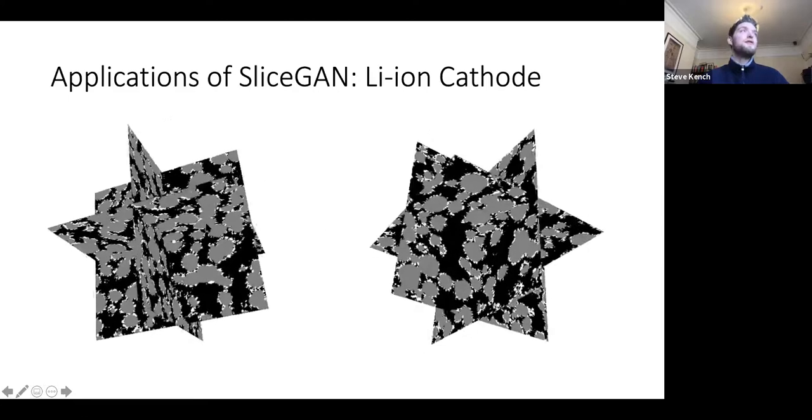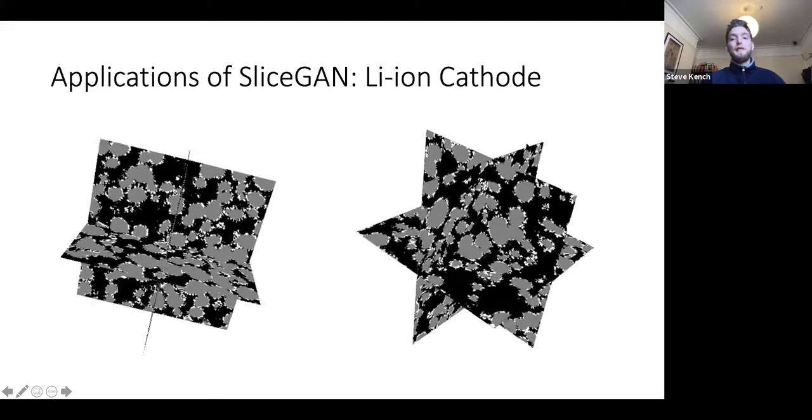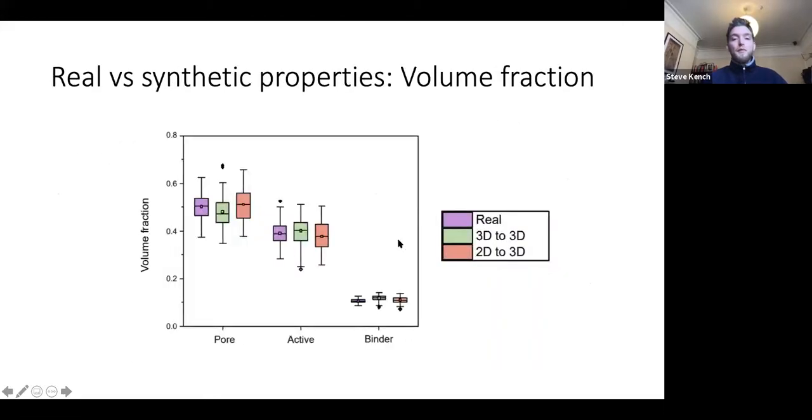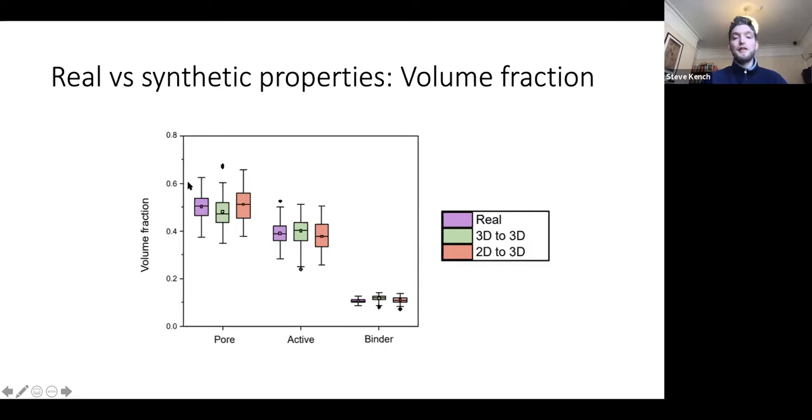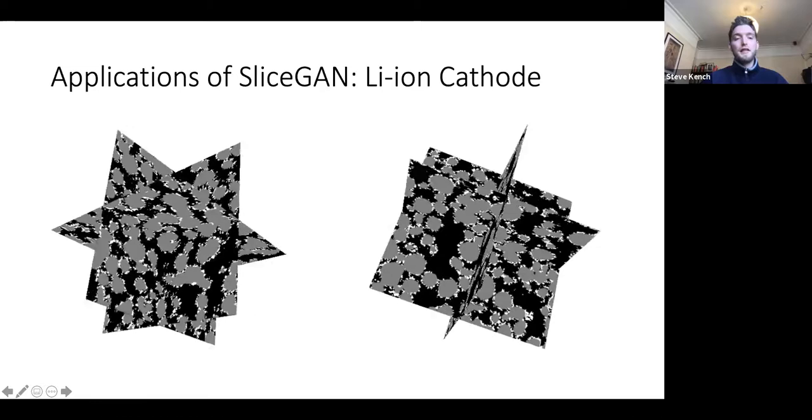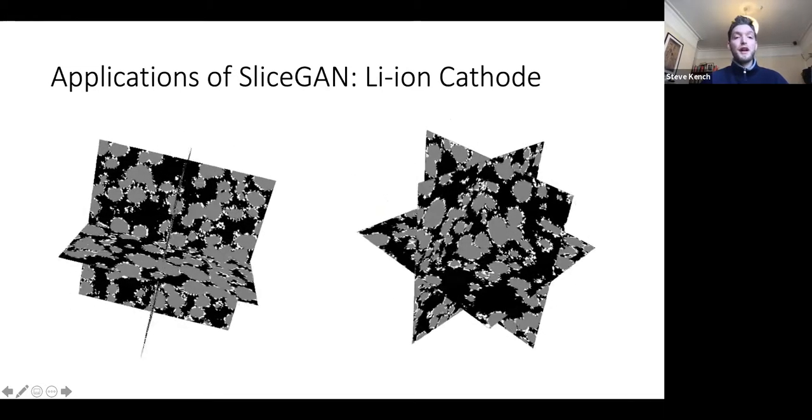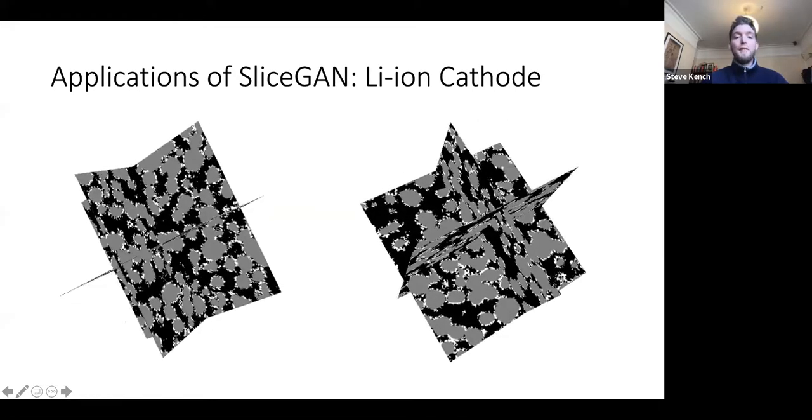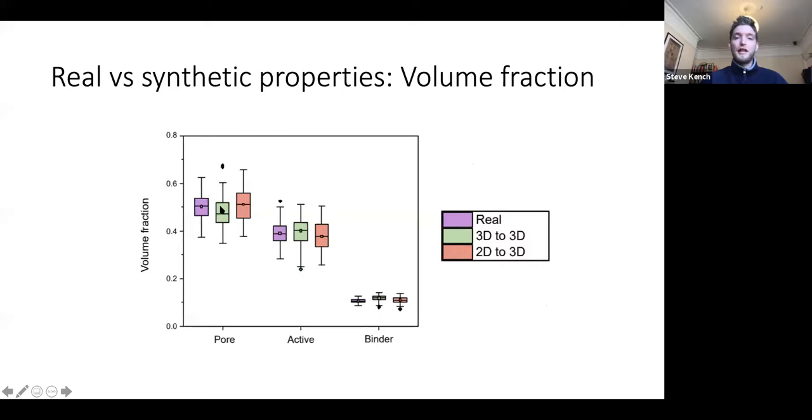And the nice thing about that is that I can then do some statistical comparisons between the real 3D data and my fake generated 3D data. And what we find is that in general, in terms of some key microstructural properties, the SliceGAN and the real data have very similar statistical properties in general. So for example, here I'm comparing volume fraction. This is volume fraction of pore, which is the black, active, which is the gray, and binder, which is the white. And you can see these statistical distributions fit relatively well. In the middle, this green bar is showing a case of the 3D to 3D. So when, if I use 3D instances of this training image to train a 3D GAN, how does it perform? Versus when I only use 2D, for example, in SliceGAN, how do the features differ there? And you can see again, 3D versus 2D, they perform very well.